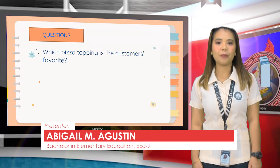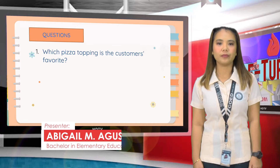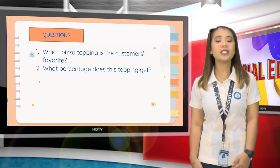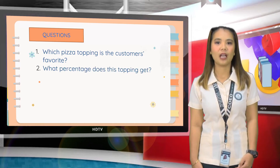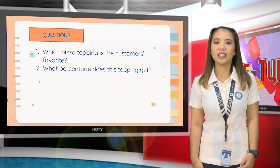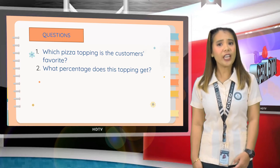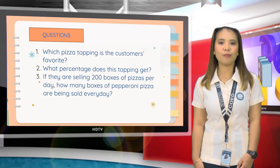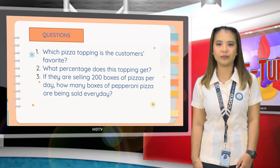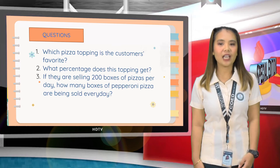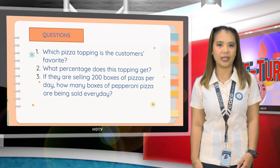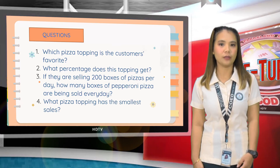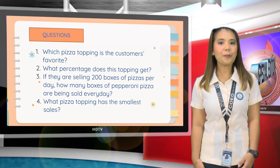Number 1: Which pizza topping is the customer's favorite? Hawaiian toppings is the customer's favorite. What percentage does this topping get? Hawaiian toppings get 45%. If they are selling 200 boxes of pizzas per day, how many boxes of pepperoni pizza are being sold every day? The pizzeria is selling 90 boxes of pepperoni pizza. What is the least percentage of pizza toppings sold? Ham pizza gets 7%.